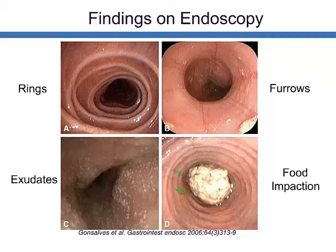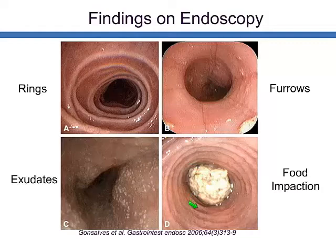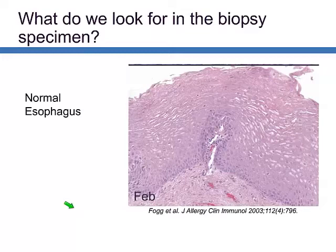This endoscopic picture shows one of our patients with a food impaction who came into the emergency room with chicken in his esophagus. You can see the concentric mucosal rings, a linear furrow, and food caught in the esophagus that required a procedure to remove.